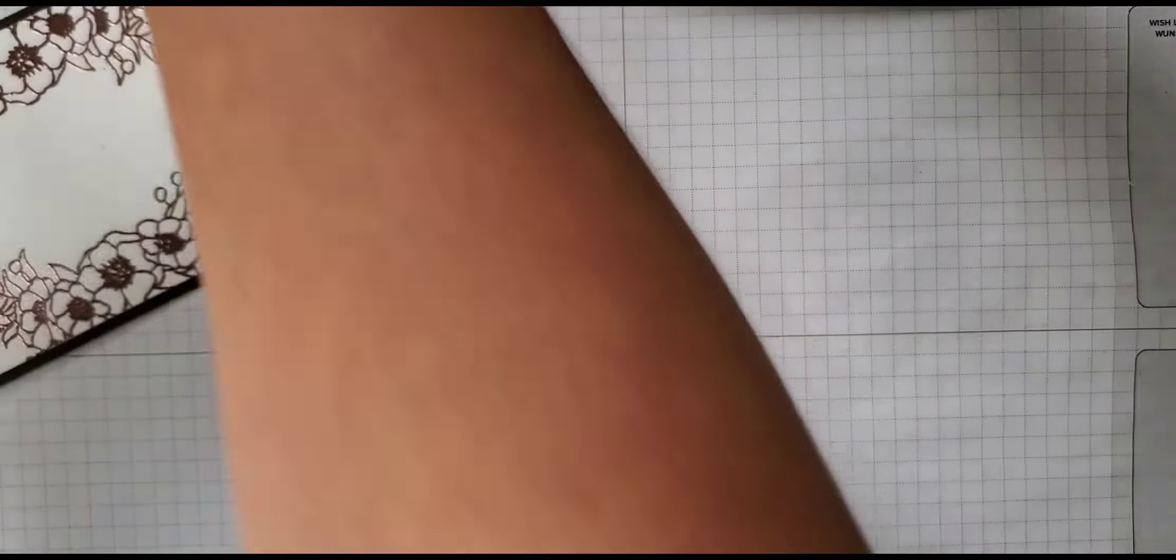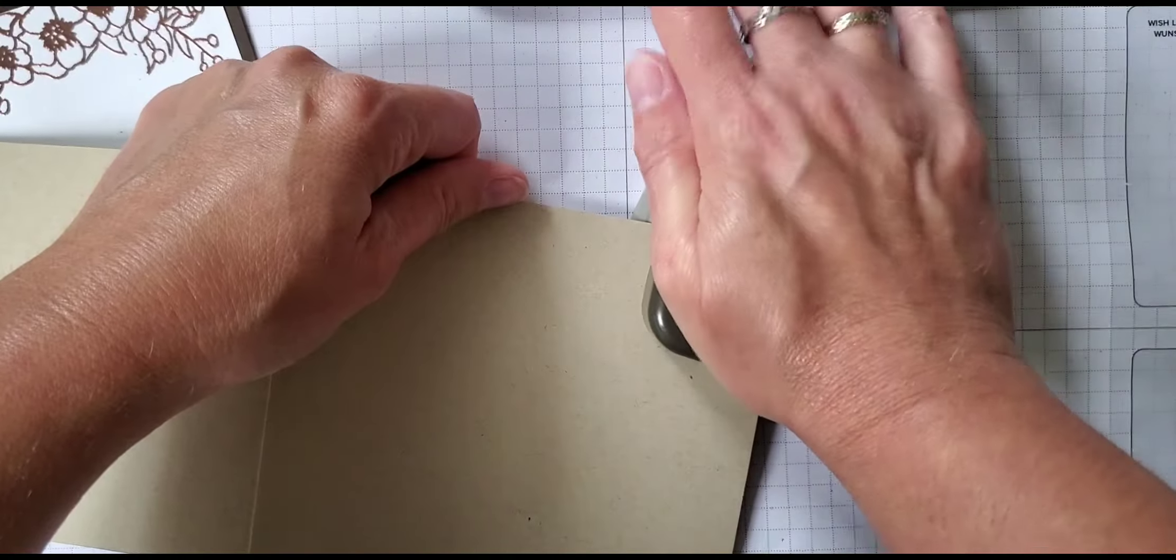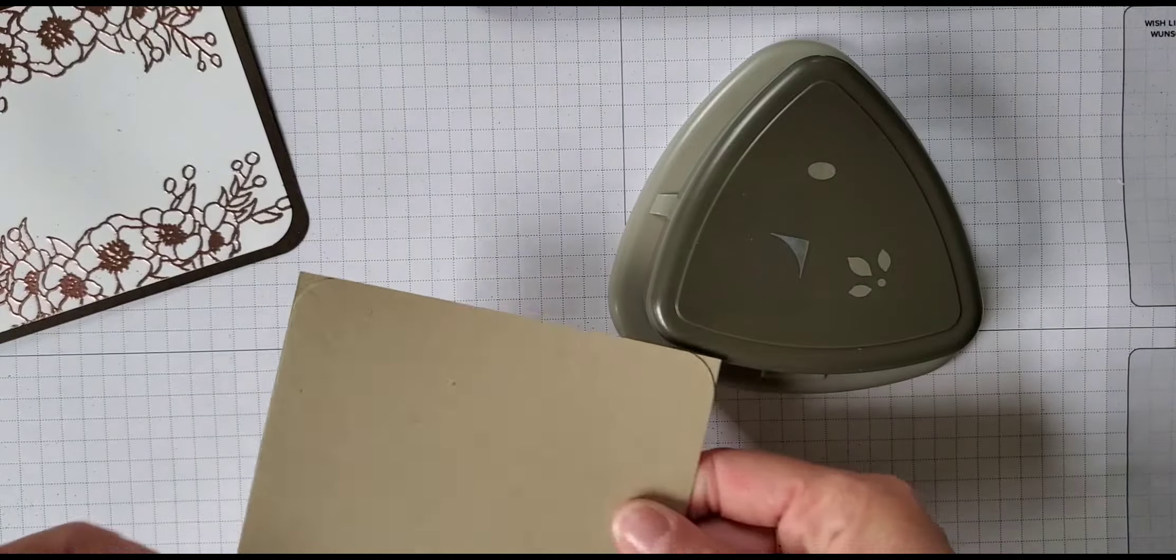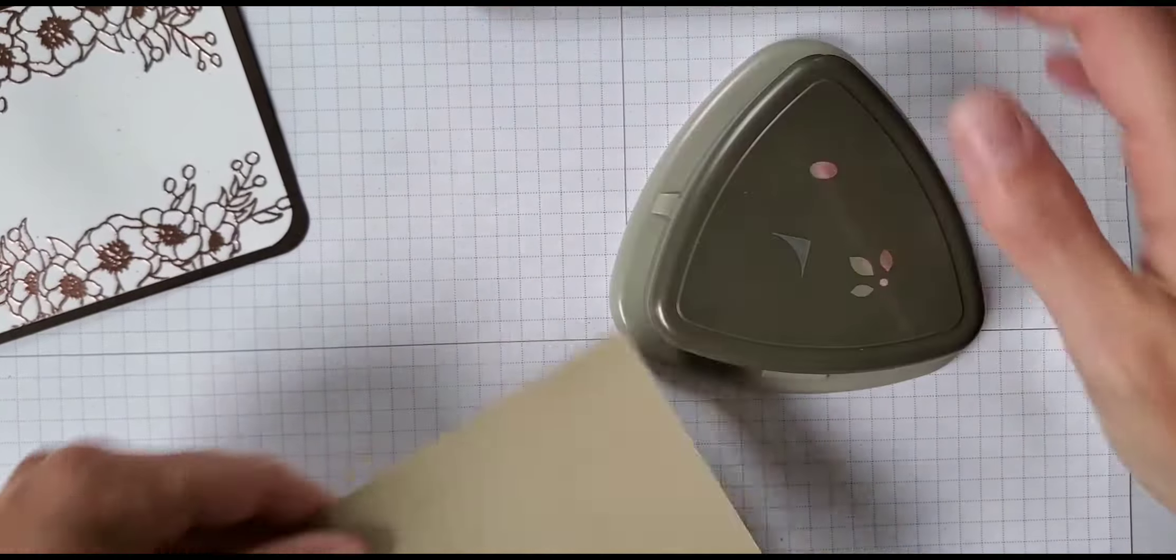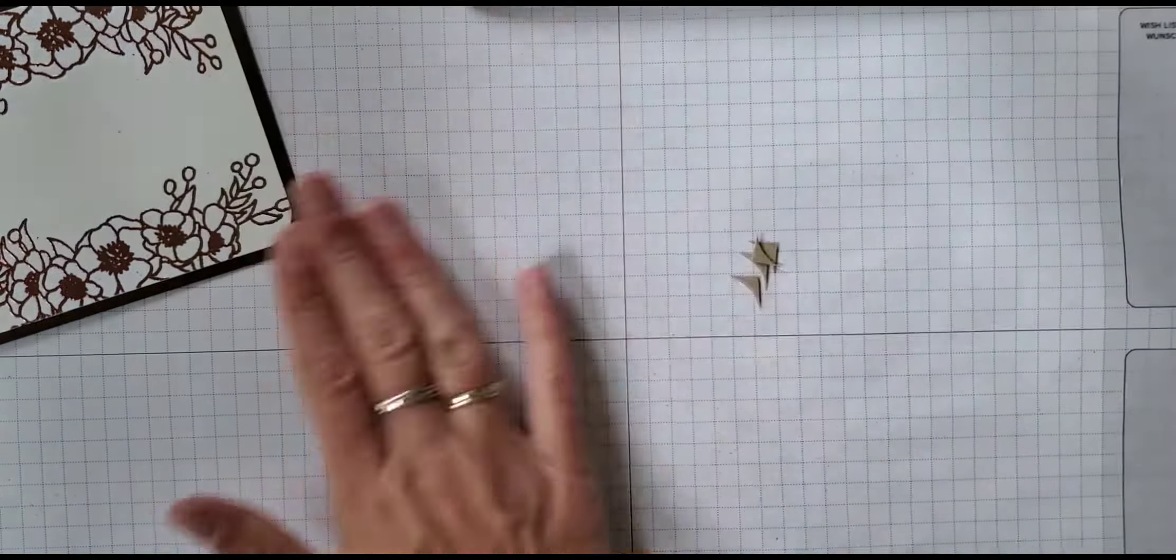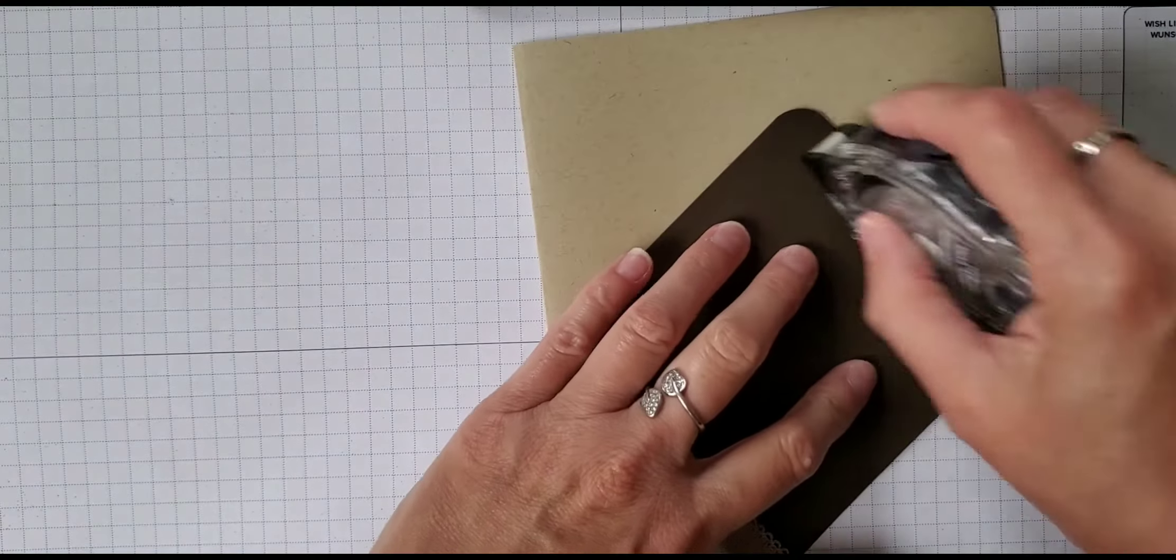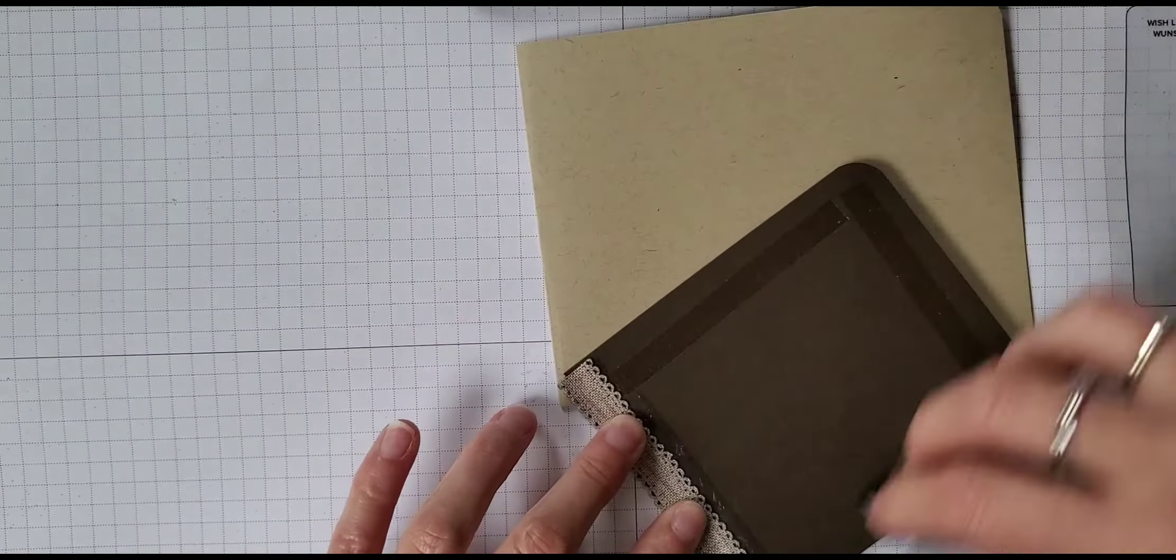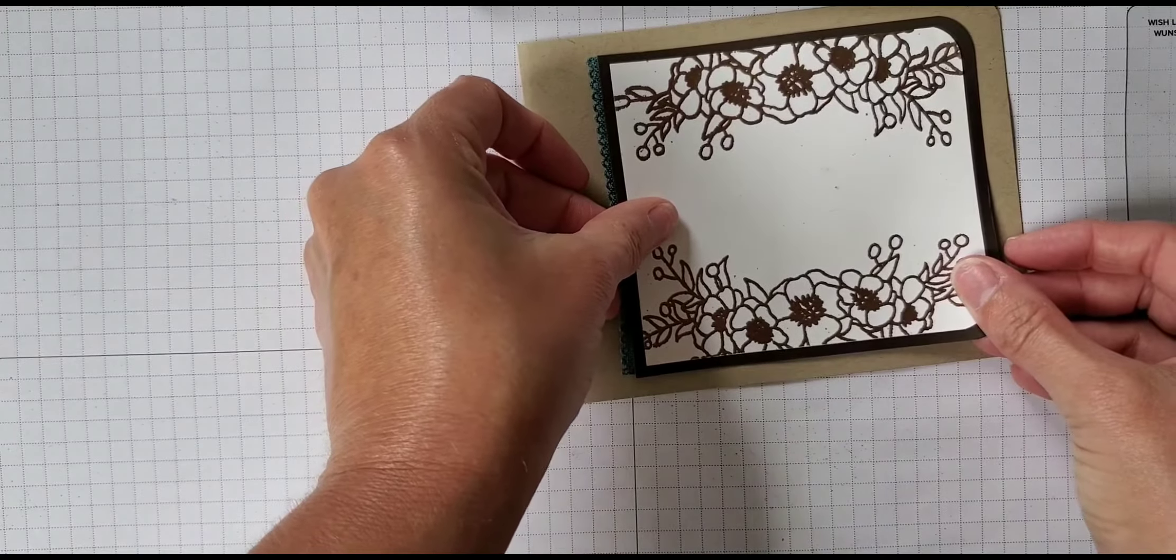Then I'm going to actually take my card base and I'm going to do corner rounding on the side here. You can't put both together because it's just not a good idea for your punch so I'm just going to punch both sides individually here. Like that. Alright and then I will tape that down here.